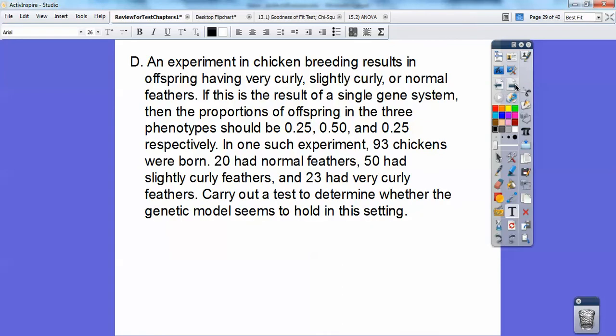So an experiment in chicken breeding results in offsprings that have very curly, slightly curly, or normal feathers. If this is the result of a single gene system, then the proportions, and that's the key word right here, then the proportions. So this tells me it's going to be a chi-square because it's proportions. If it was means, it would be an ANOVA test of offspring. And the three phenotypes should be 0.25, 0.50, and 0.25 respectively. So 0.25 would be for the very curly, 0.50 would be the slightly curly, and then 0.25 would be the normal. So in one such experiment, 93 chickens were born. So to get the expected value, we're going to go 93 times 0.25, 93 times 0.50, 93 times that. But the observed ones were 20 had normal feathers, 50 had slightly curly feathers, and 23 had very curly feathers. So carry out a test and determine whether the genetic model seems to hold in the setting right here.